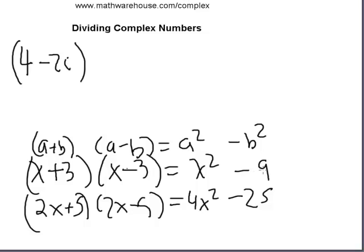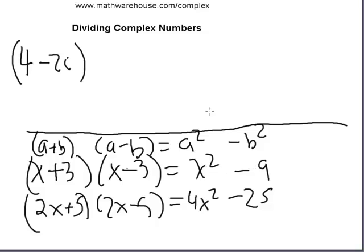What's interesting about this kind of pairing is that there's no middle term — just a squared term and a number. It turns out the same pattern holds for complex numbers. If we multiply (4-2i)(4+2i), the middle term will go away. In fact, all i terms go away, and this is going to be key to dividing complex numbers.